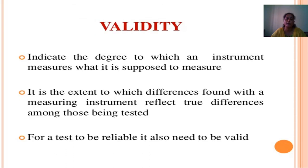Validity indicates the degree to which an instrument measures what it is supposed to measure. It is the extent to which differences found with measuring instruments reflect true differences among those being tested. For a test to be reliable, it also needs to be valid.